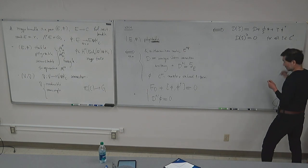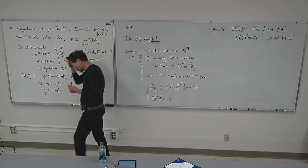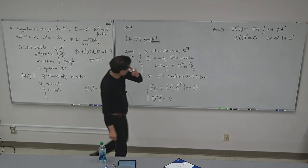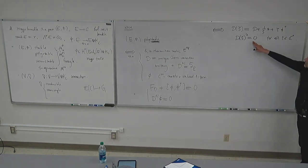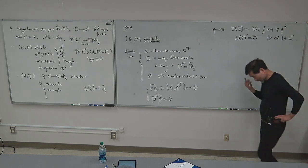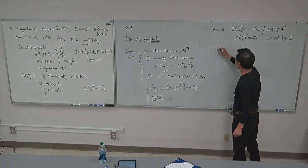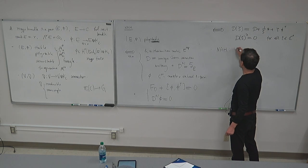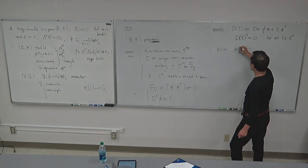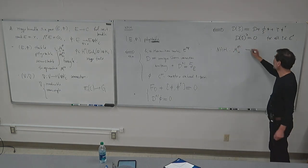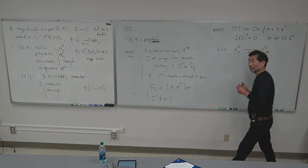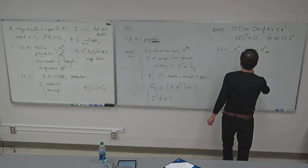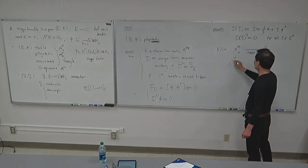The non-abelian Hodge correspondence is: the moduli space of Hitchin poly-stable objects is homeomorphic to the completely reducible connections. How it goes is that you start from (E, φ). Since it is poly-stable, this is equivalent to choosing a topological bundle, H, a connection, and also φ satisfying the equation D_ζ = 0 that I just mentioned.